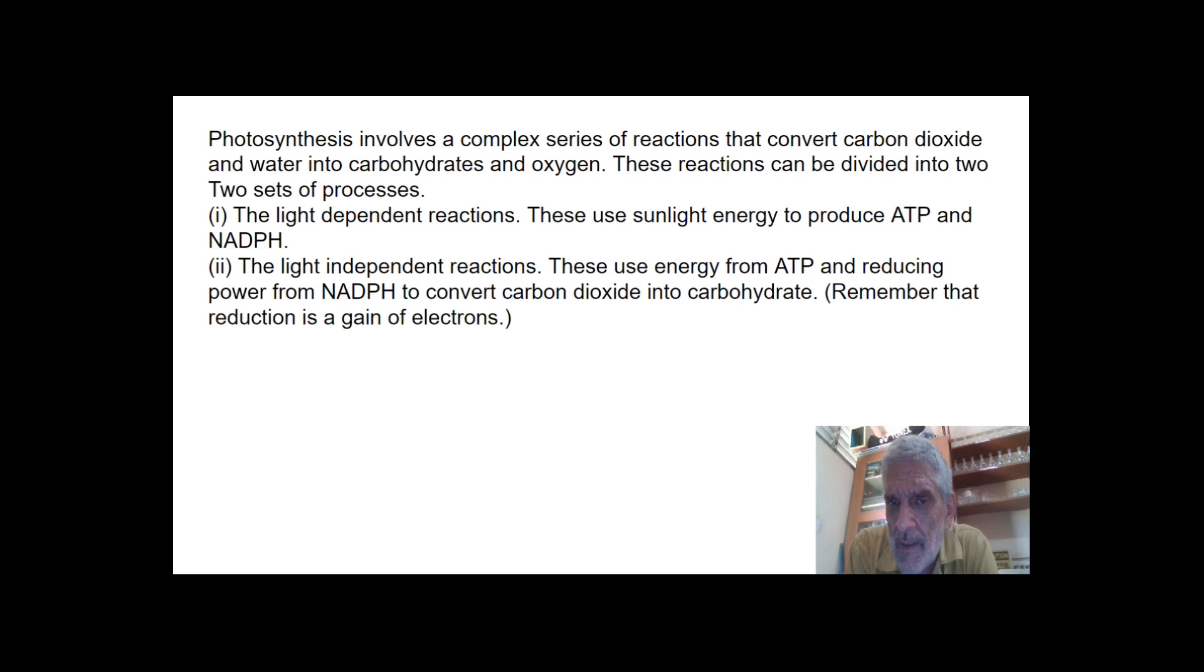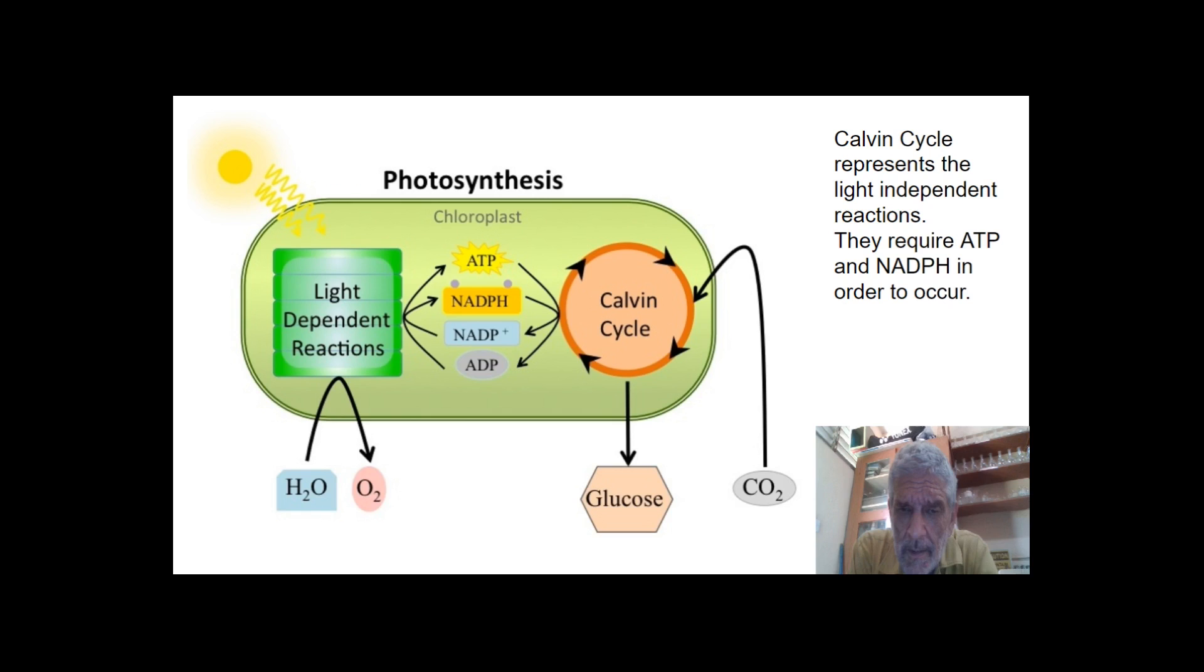And the light-independent reactions. These use the energy from the ATP and the reducing power from the NADPH to convert carbon dioxide into carbohydrates. Remember reduction can be addition of hydrogen, and it can also be addition of electrons. Both of those are involved in the formation of NADPH. As I said, remember reduction is a gain of electrons.